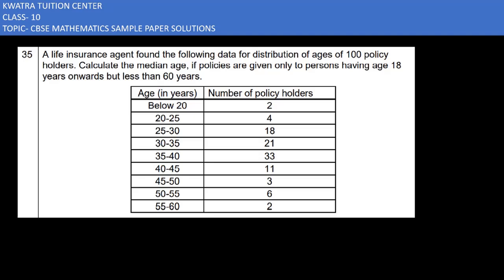So you have class interval. You have given number of policyholders. That means this is the frequency. And the other one is CF. You have to find the CF. CF, the first value is as it is.